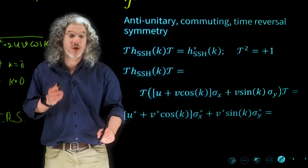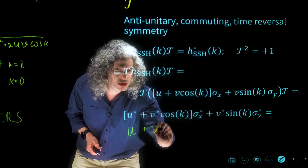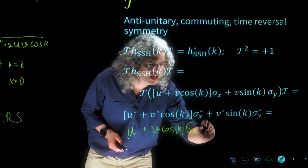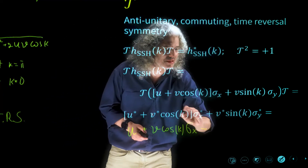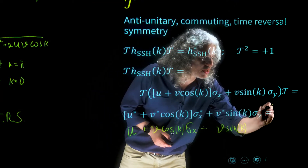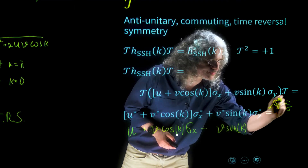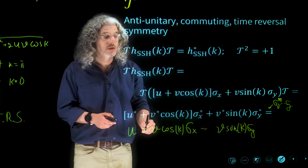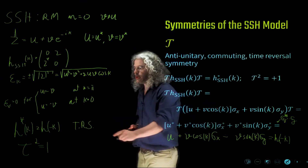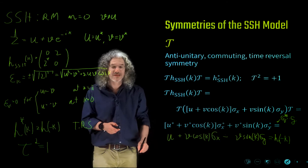We have sigma_Y going to sigma_Y-star which equals minus sigma_Y. Putting it all together, this is precisely equal to H of minus k. So looking at our definition for having time reversal symmetry, we confirm that the SSH model has time reversal symmetry.